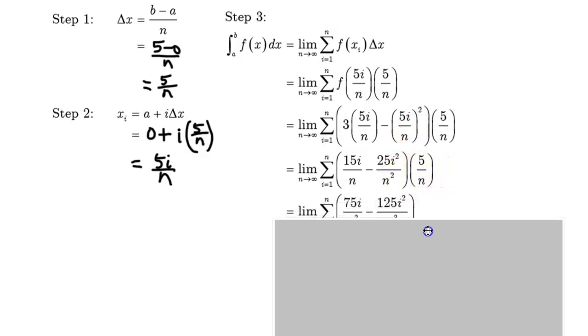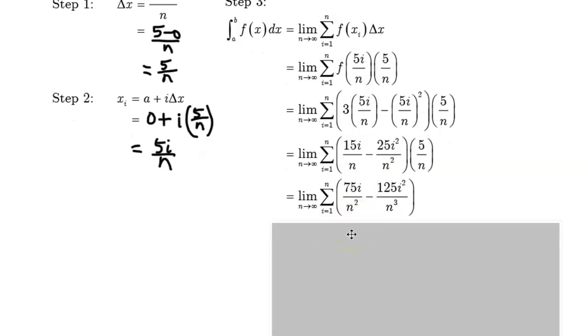But we'll probably incorporate that in the next step. And indeed, we do. We distribute the 5 over n to each of the terms inside this binomial, and so what we end up with is 75i over n squared minus 125i squared over n cubed.